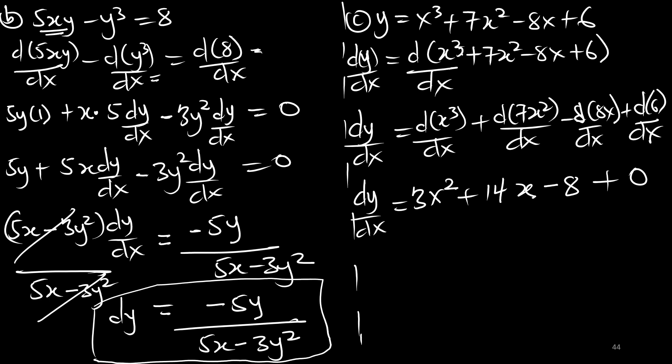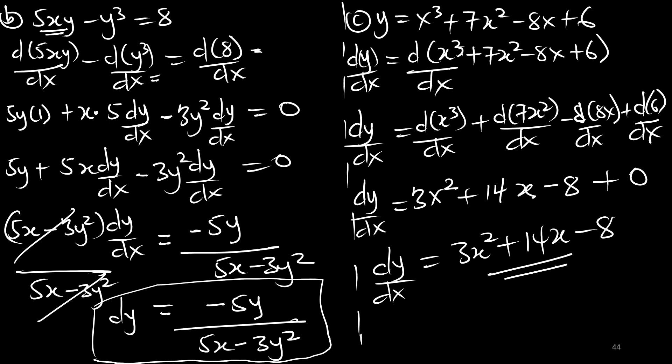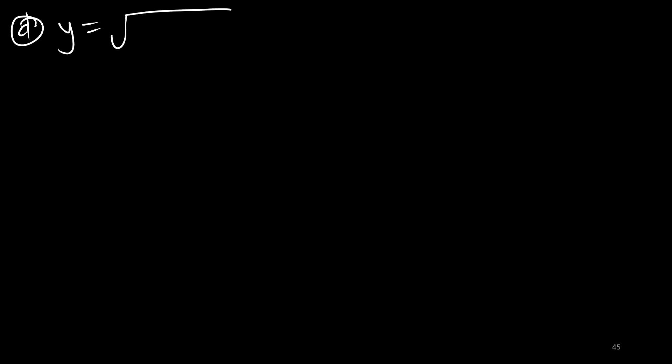Therefore dy/dx equals 3x squared plus 14x minus 8. That is the derivative for part C. Moving on to part D: y equals the square root of x cubed minus 7.